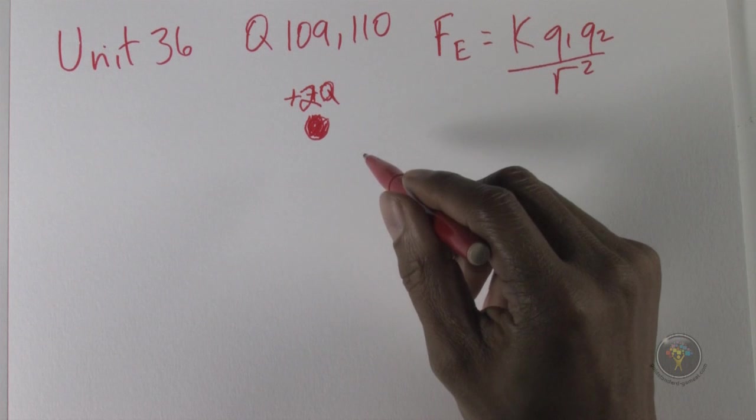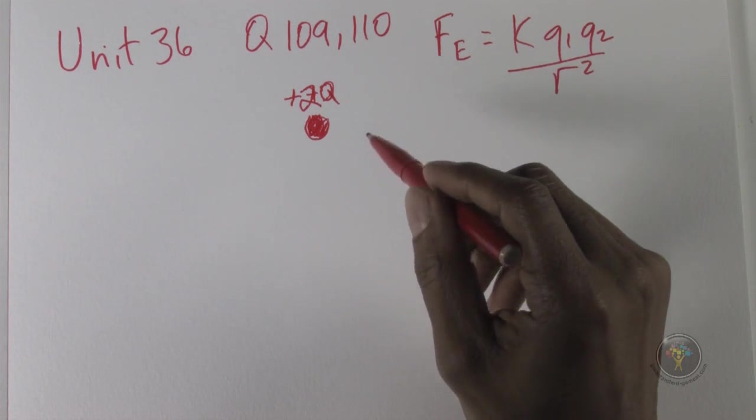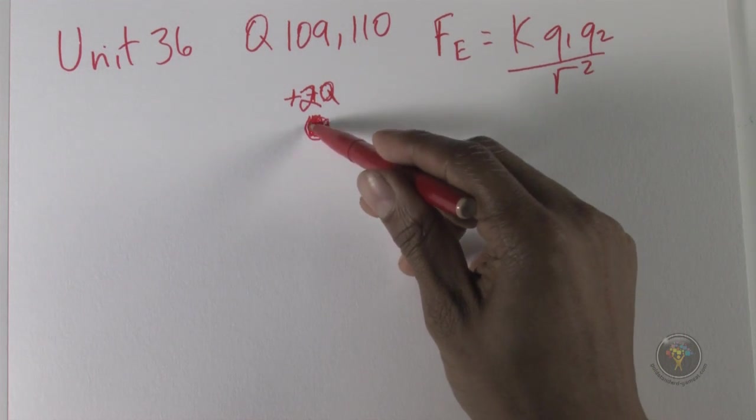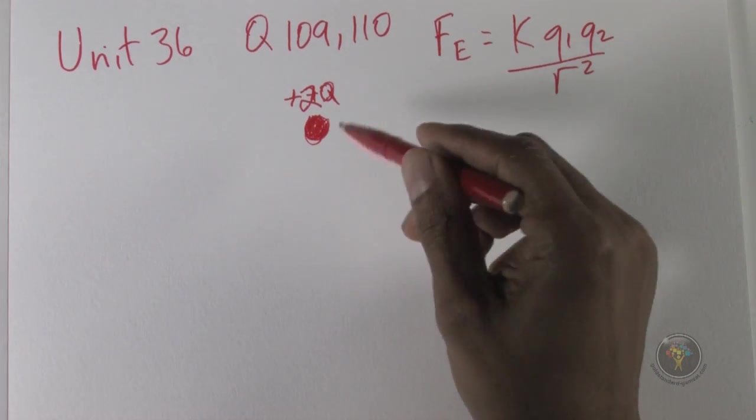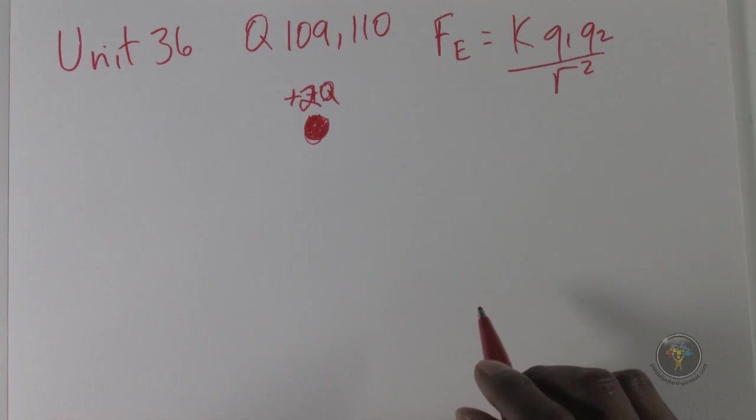In question 109, where it says the sphere S will experience a zero net electrical force when d2 is equal to, we want to know at what point the forces on both sides are going to be balanced, going to be equal.